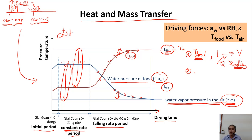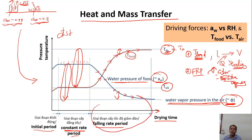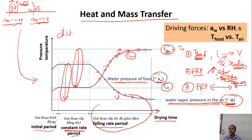During the falling rate period the food will change a lot — unlike the constant rate period. We may change color and lose bioactive or heat-sensitive components. This is because only during the falling rate does the food temperature become high. The falling rate period is normally longer than the constant rate period because it is more difficult to remove bound water than free water.